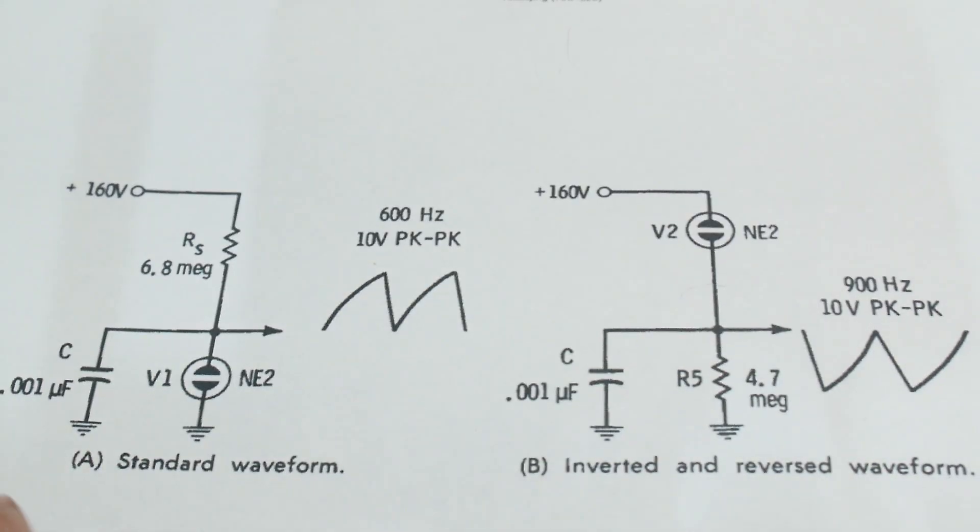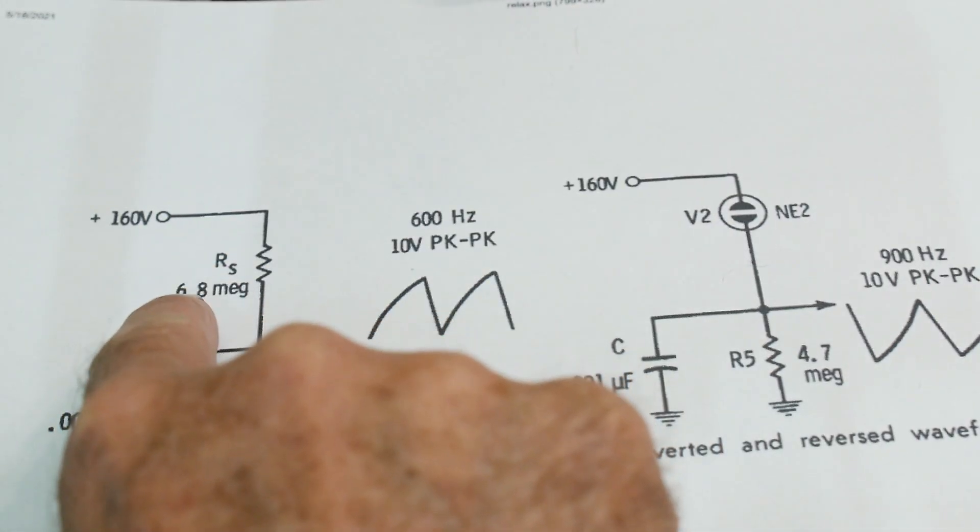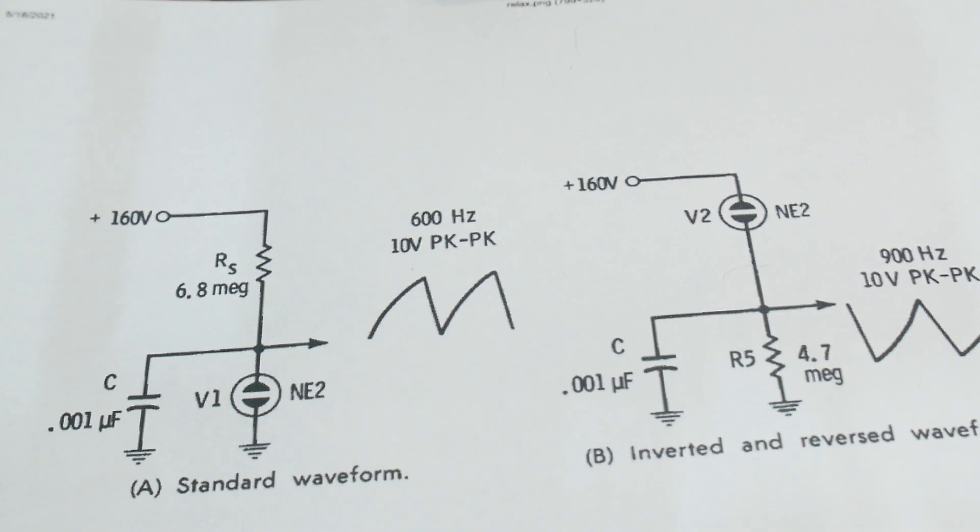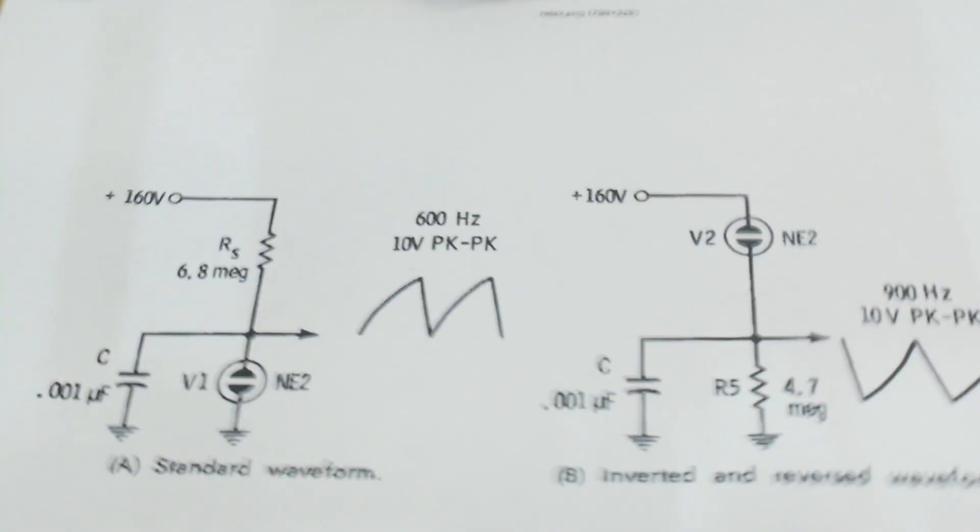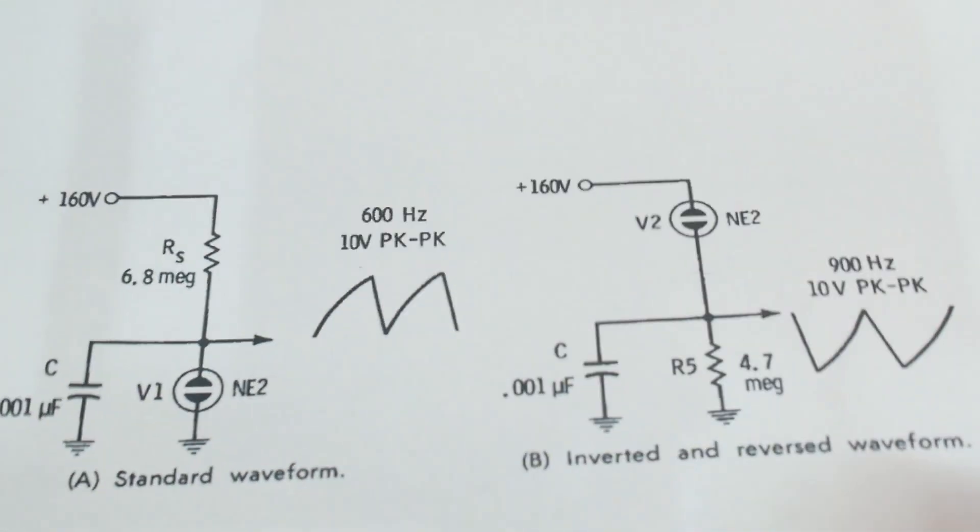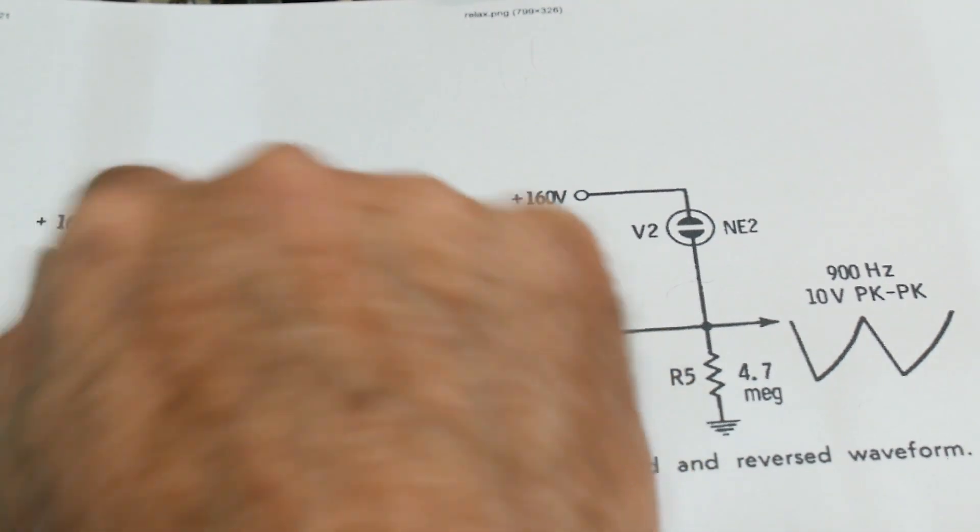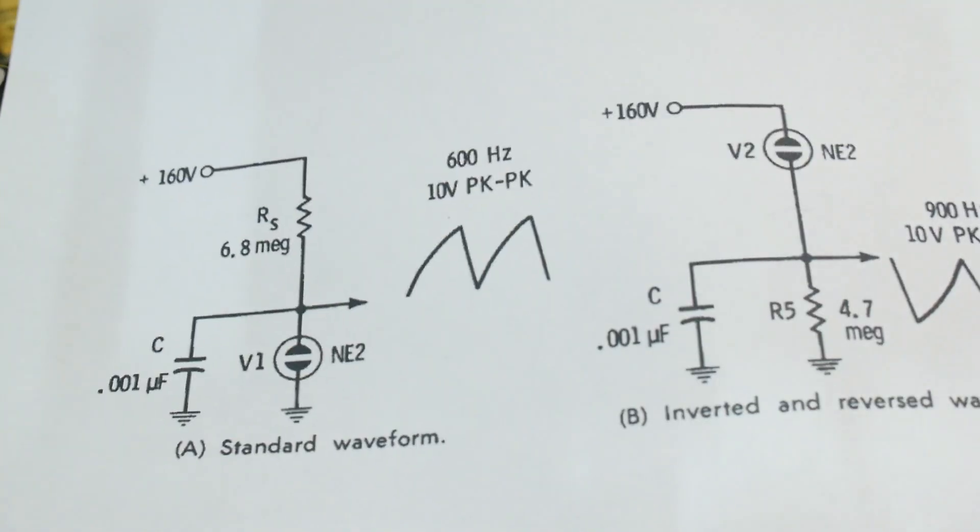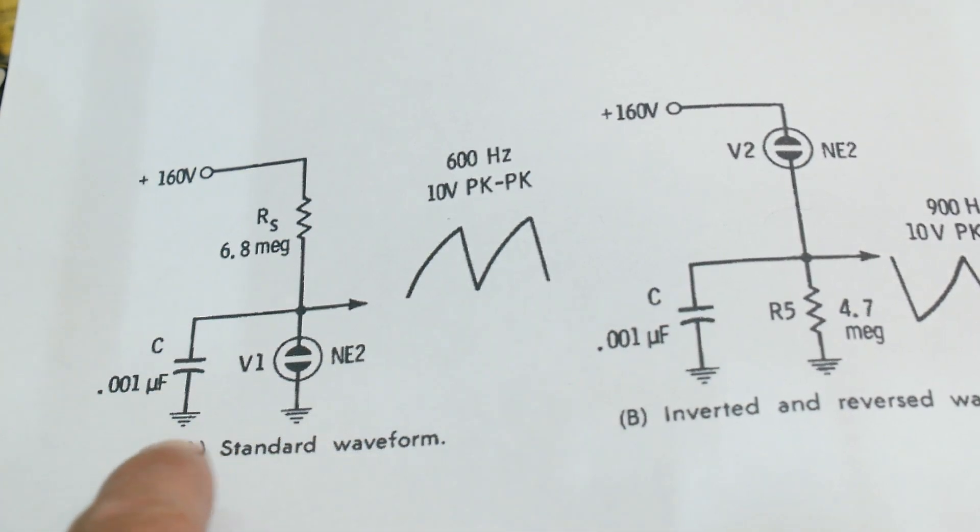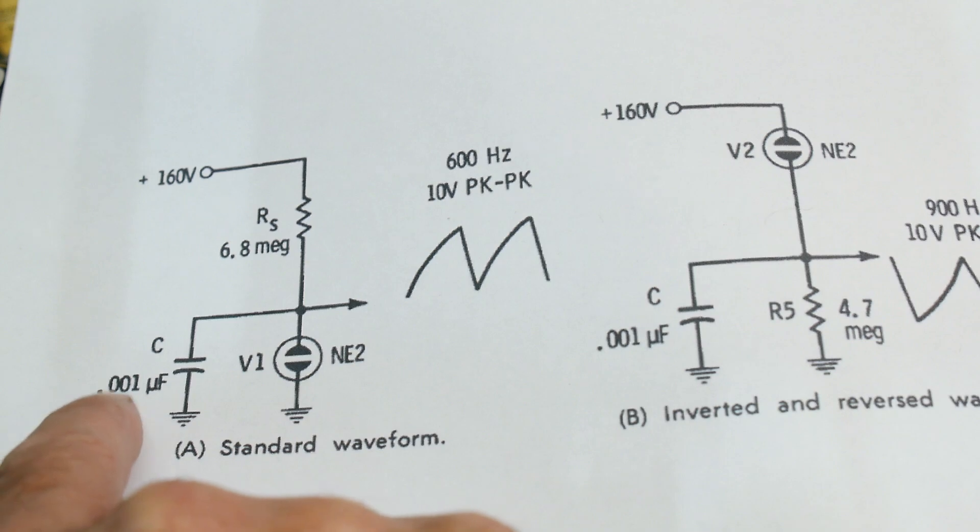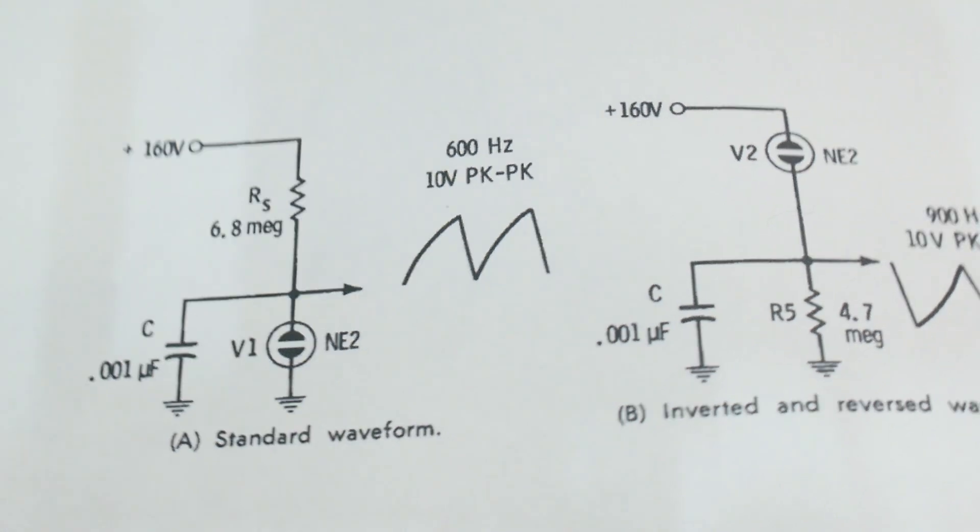So anyway, so what I did was I have about five and a half megs here, instead of 6.8. But the big difference I made was I put in a bigger capacitor. So I have a 0.022 microfarad instead of 0.001 microfarads. So 20 times this one. And so hopefully it'll be 20 times less in frequency.